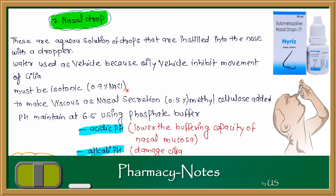The nasal cavity solution has a limited buffer capacity. To make the solution isotonic, 0.9% NaCl is added, and the concentration can be adjusted if the solution is hypotonic or hypertonic. To match the viscosity of nasal secretion, 0.5% methyl cellulose is added, making the solution slightly thicker. The pH is maintained at 6.5 using a phosphate buffer system, because adding too acidic or too alkaline a solution would damage or irritate the nasal mucosa.